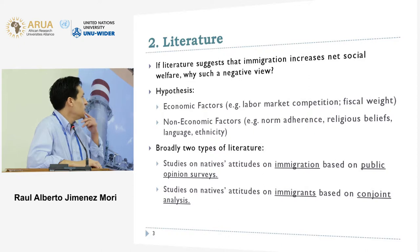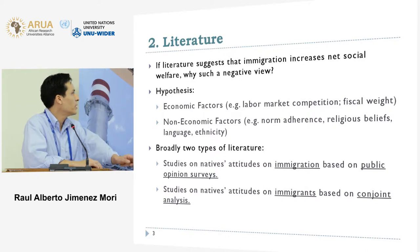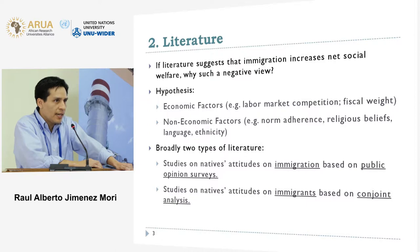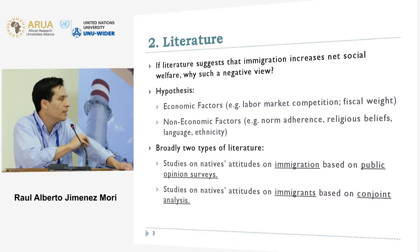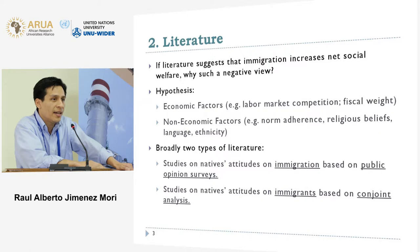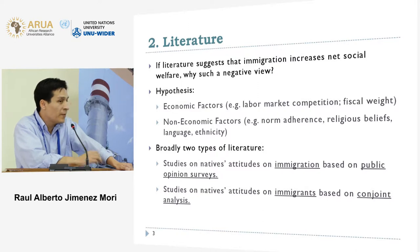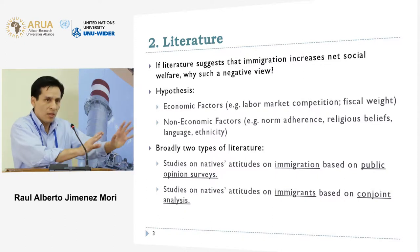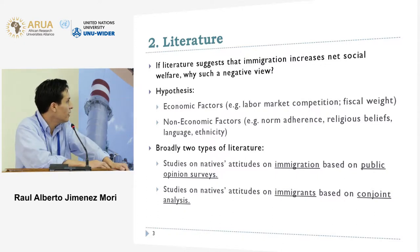You will know these determinants. The point is that behind those factors there are characteristics of both the immigrant and the resident. For example, in the labor competition hypothesis, it might be the case that a highly educated resident might be against highly educated competition entering the country. So these specific attributes of each party matter. Broadly, there are two types of literature studying these hypotheses.